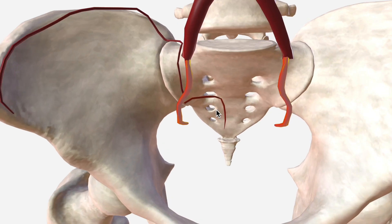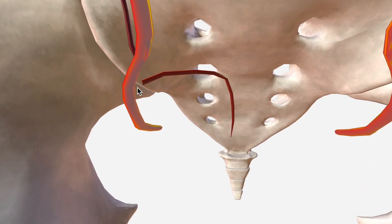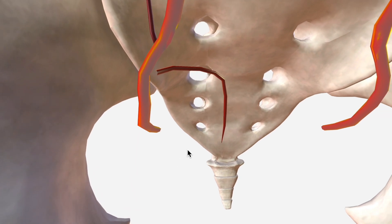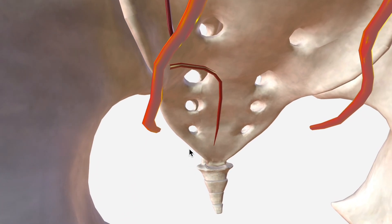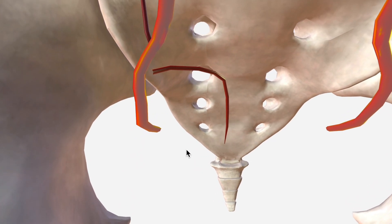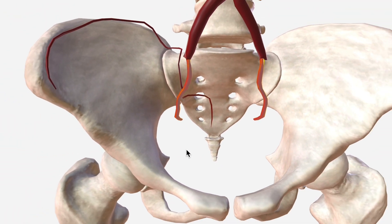Next, we have the lateral sacral artery, which proceeds inferiorly to supply the skin and muscle dorsal to the sacrum. That's the lateral sacral artery.